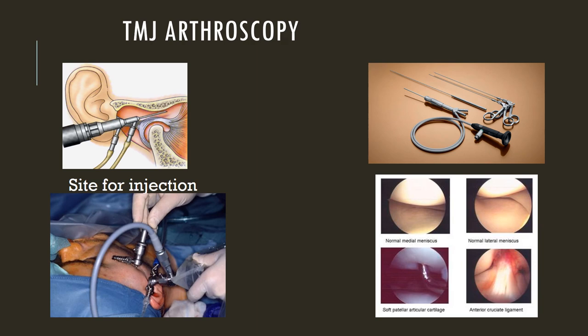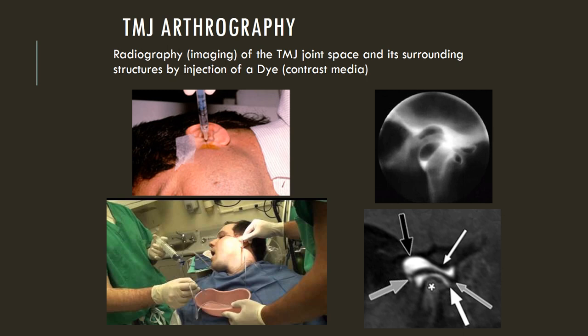Arthroscopy of the TMJ, a procedure where dye is injected or the joint is viewed with an endoscopic approach, is less opted for these days. It is a very painful and technique-sensitive procedure. Arthrography involves injecting radio-opaque contrast media into the TM joint to evaluate the joint space. Like arthroscopy, it is of less significance today and has largely been replaced by MRI and CT imaging.